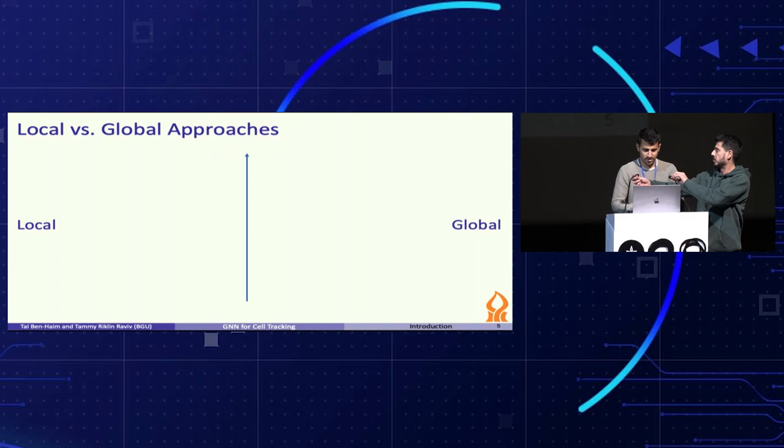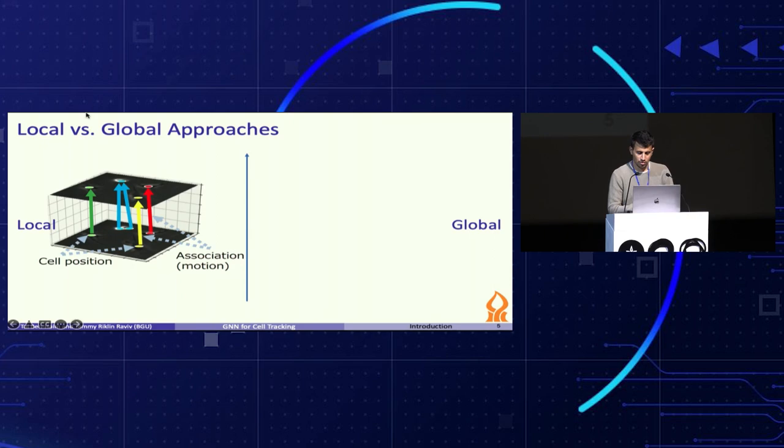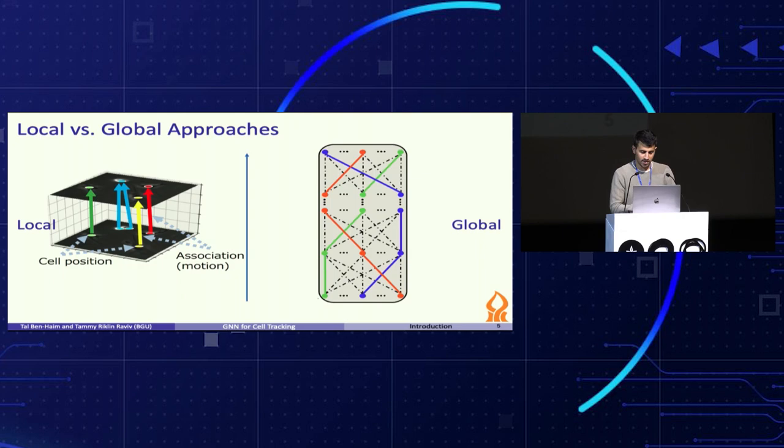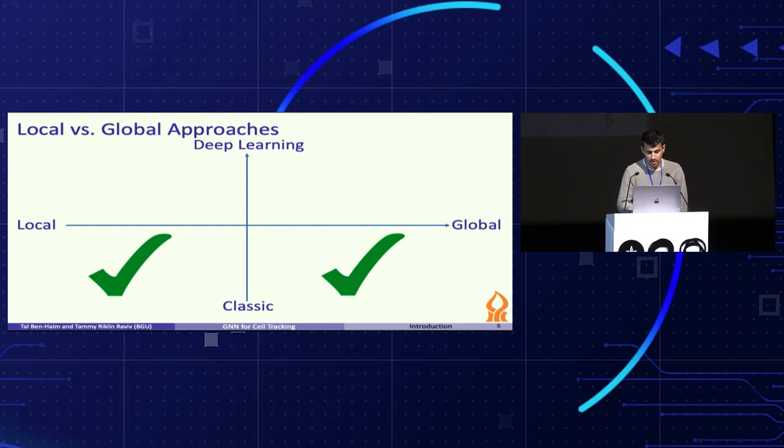Cell tracking methods can be broadly divided into two main approaches: a local approach, where cell tracks are generated by associating cell instances in consecutive frames, solving the problem in a greedy and therefore sub-optimal manner, and a global approach in which complete cell trajectories are simultaneously extracted. For both approaches, there are classical solutions. Some recent methods address local cell tracking using deep learning, and to the best of our knowledge, we are first to propose a deep learning method to globally solve the cell tracking task.